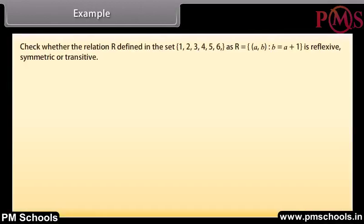Example: Check whether the relation R defined in the set {1, 2, 3, 4, 5, 6} as R = {(a, b) such that b = a + 1} is reflexive, symmetric, or transitive.